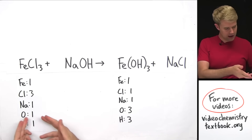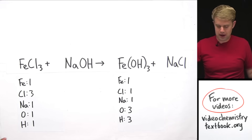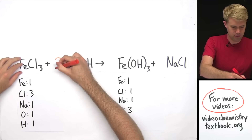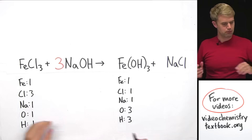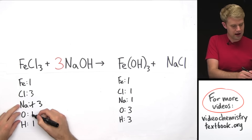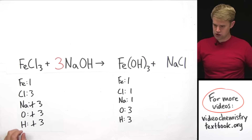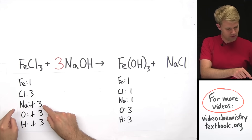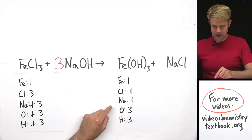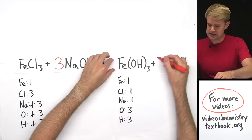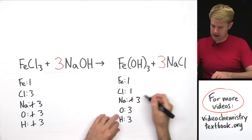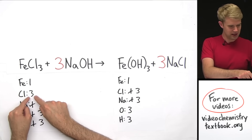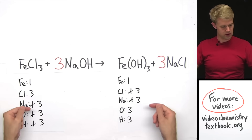I have an imbalance in oxygens — three on the right and one on the left — so I put a three in front of NaOH. That gives me three Na, three O, and three H, which balances the oxygens and hydrogens. But now sodium is three on the right and one on the left, so I multiply NaCl by three, giving three Na and three Cl. I have three Cl on the left and three Cl on the right — one, three, three, three, three — it balances.